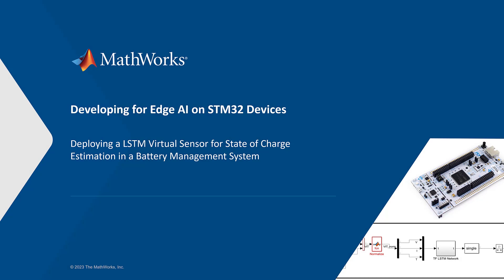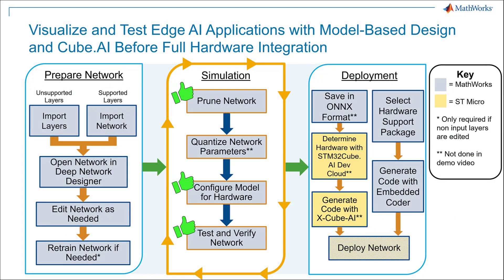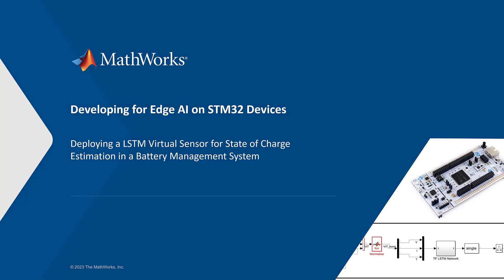And there you have it, a comprehensive workflow for deploying neural networks to STM32 devices using software from MathWorks. Let's recap the stages we've showcased and their significance in achieving efficient deployment of neural networks. We began by preparing our imported network in MATLAB, leveraging its powerful tools and capability for deep learning. Next, our network was compressed for optimal performance on the STM32 Nucleo device. Finally, we utilized Embedded Coder to generate C code from our compressed network. This step not only enabled us to convert the models into source code, but also facilitated seamless integration with the STM32 hardware when paired with a hardware support package. By leveraging the power of the STM32 platform and the robust capabilities of MathWorks' software, we were able to accelerate the deployment of neural networks and bring the benefits of AI to STM32 devices.